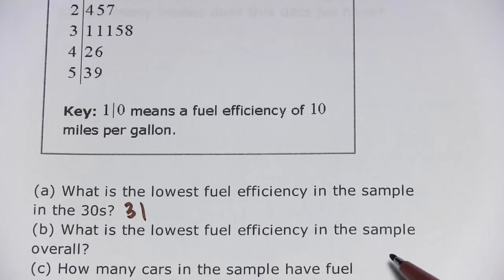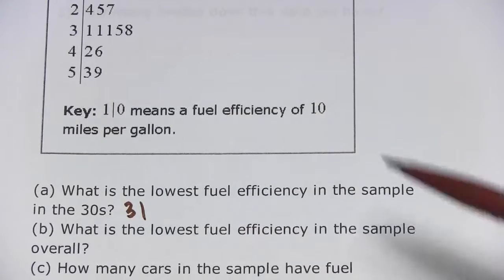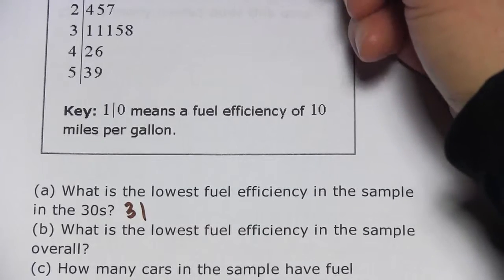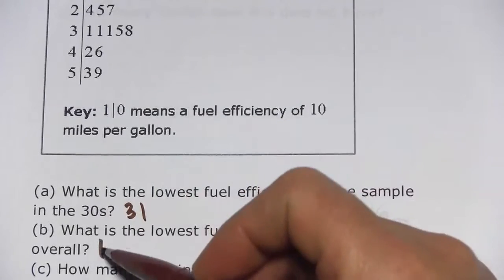B says, what is the lowest fuel efficiency in the sample overall? Well, the lowest would be this number right here, 10. There's nothing lower than that. So that's 10.